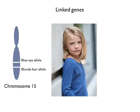Another complex inheritance pattern occurs when genes are linked — meaning they are found on the same chromosome. They do not follow Mendel's law of independent assortment; instead, they move together into gametes because they're on the same chromosome. A good example in humans is eye color and hair color. The genes for eye color and hair color are found on chromosome 15, close to each other, so they move together into gametes. The allele for blue eyes is often linked to the allele for blonde hair, and you will frequently see individuals with that combination.